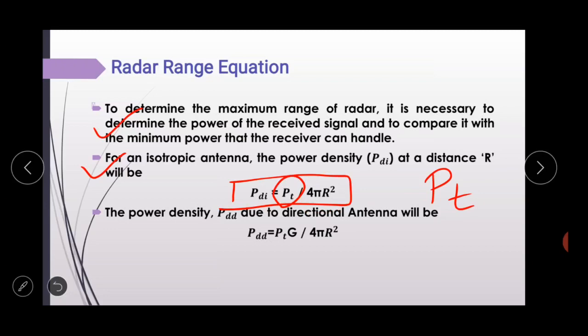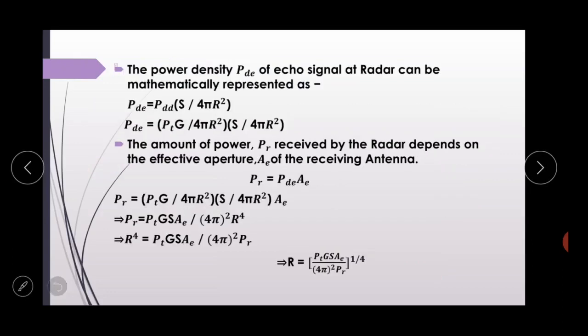Antennas used in radar are directional rather than isotropic, so they have a power gain G. In radar हम generally directional antenna use करते हैं, isotropic नहीं। जब directional antenna use करते हैं तो power gain G होता है। Hence the power density at the target becomes PD = PTG / 4πR² — the same equation with G multiplied in.